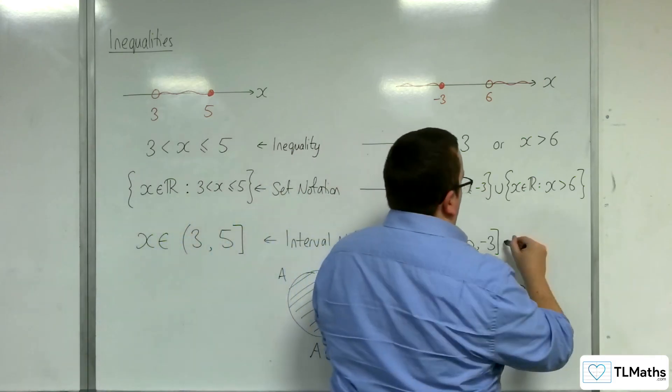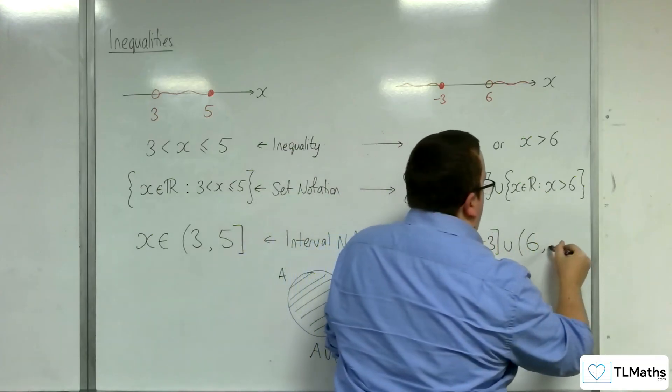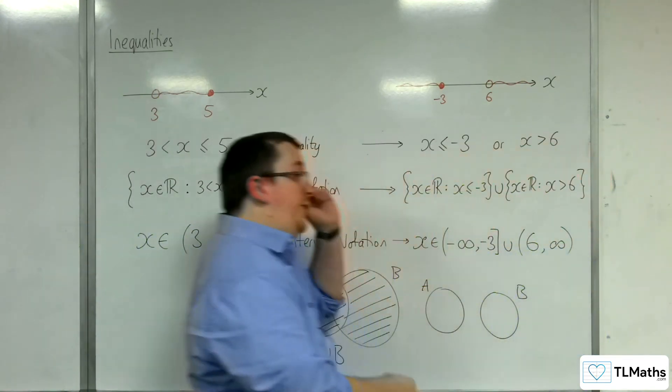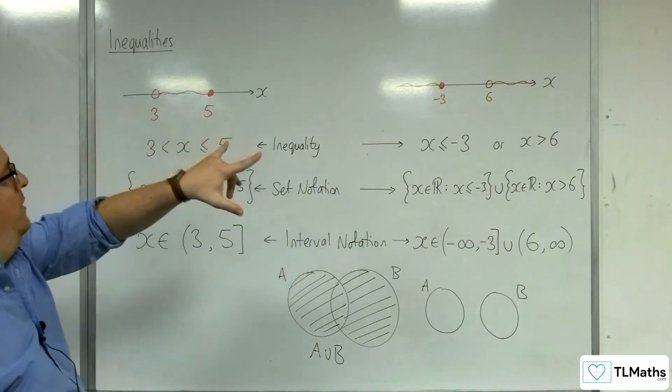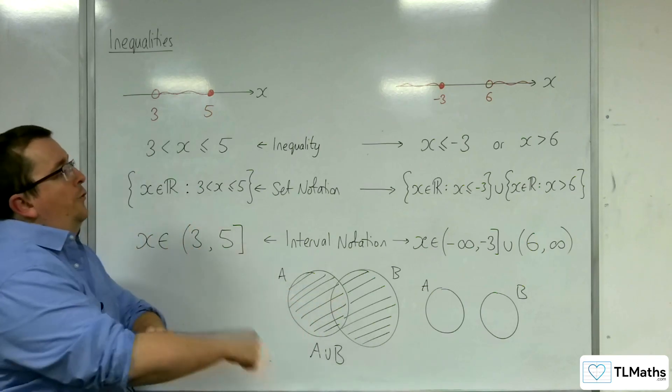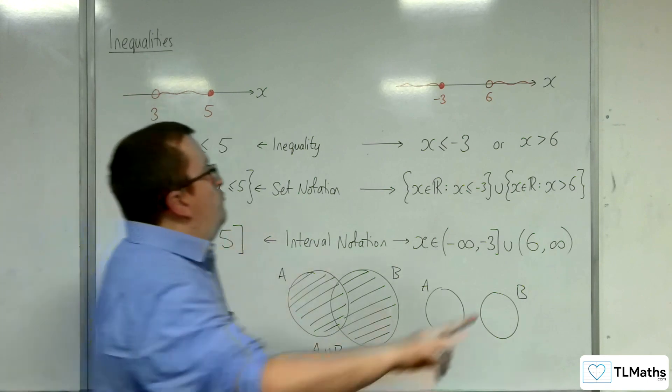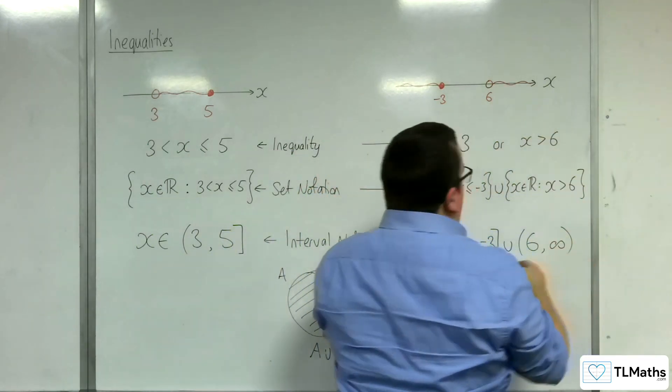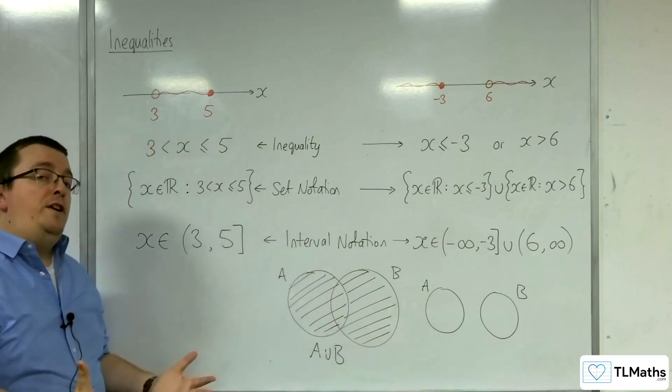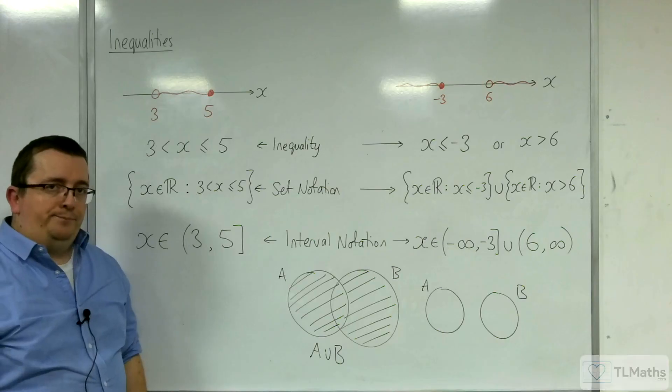For interval notation, we also use the union, curved bracket for 6 because we're not including it, and going up to positive infinity. And so, this introduces to you how we can represent a region via an inequality, set notation, or interval notation. And on top of that, notice how one region, one inequality, two regions, two inequalities. And if you had three regions, you'd go to three inequalities, four regions, four inequalities. The number of regions that you have tells you how many separate pieces you would need to describe it.